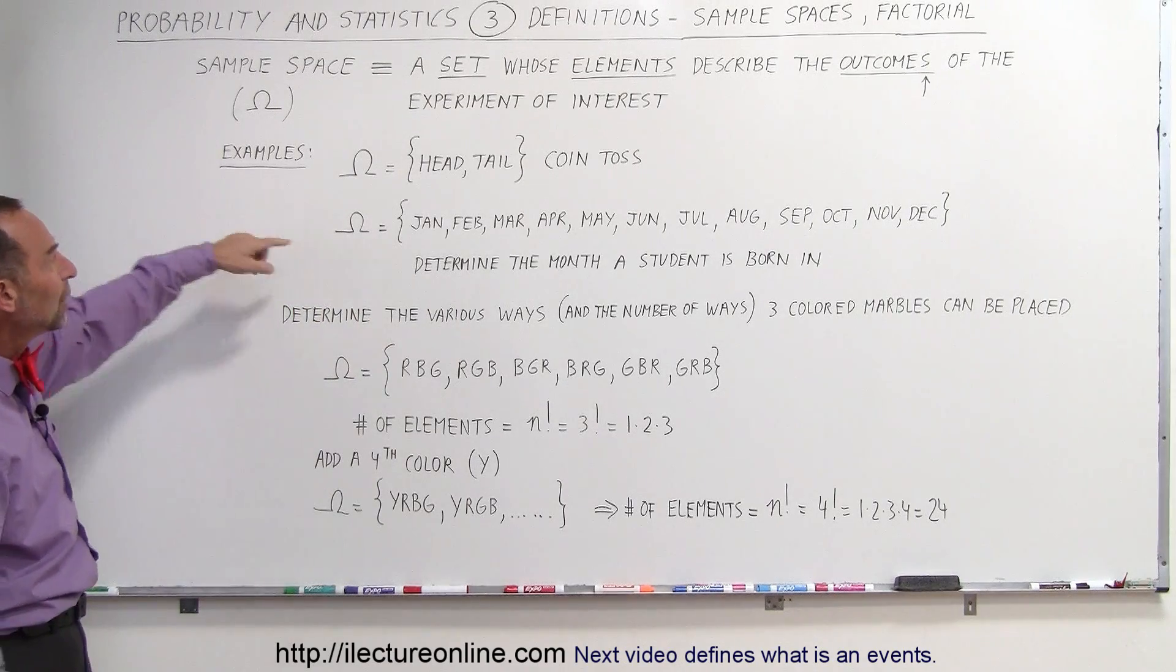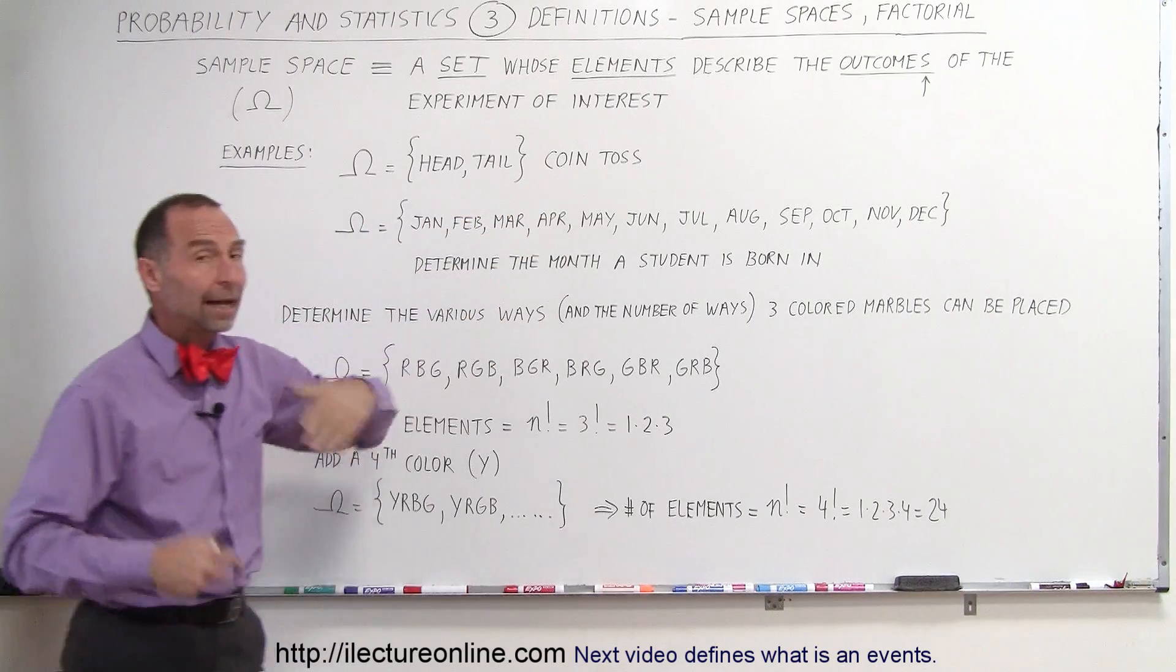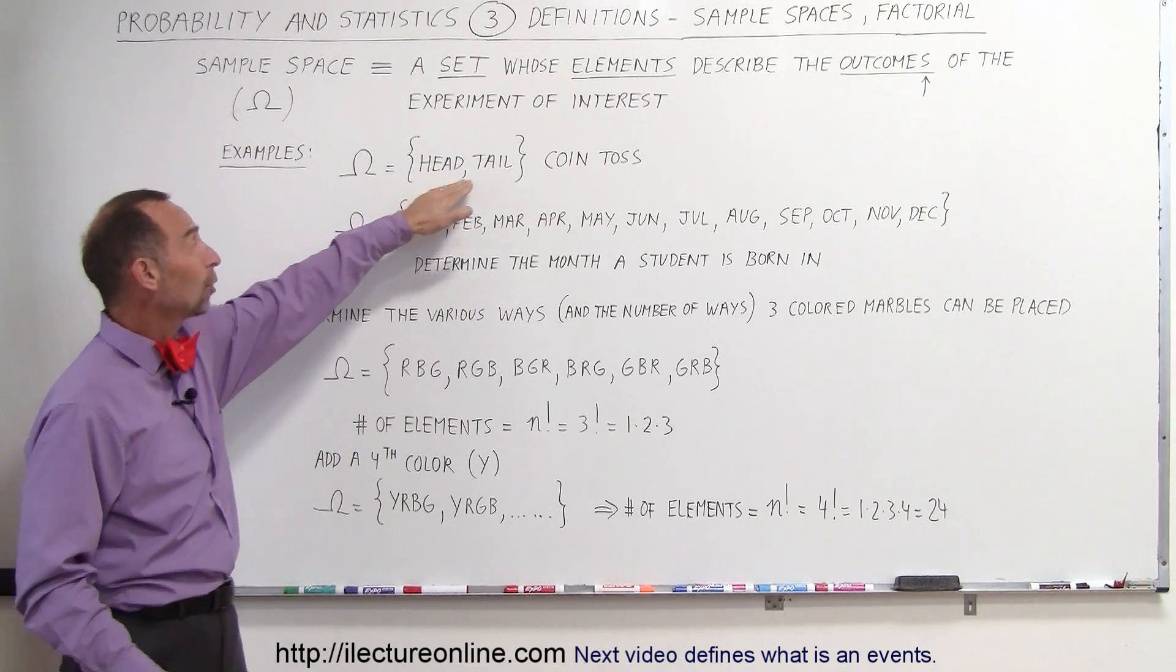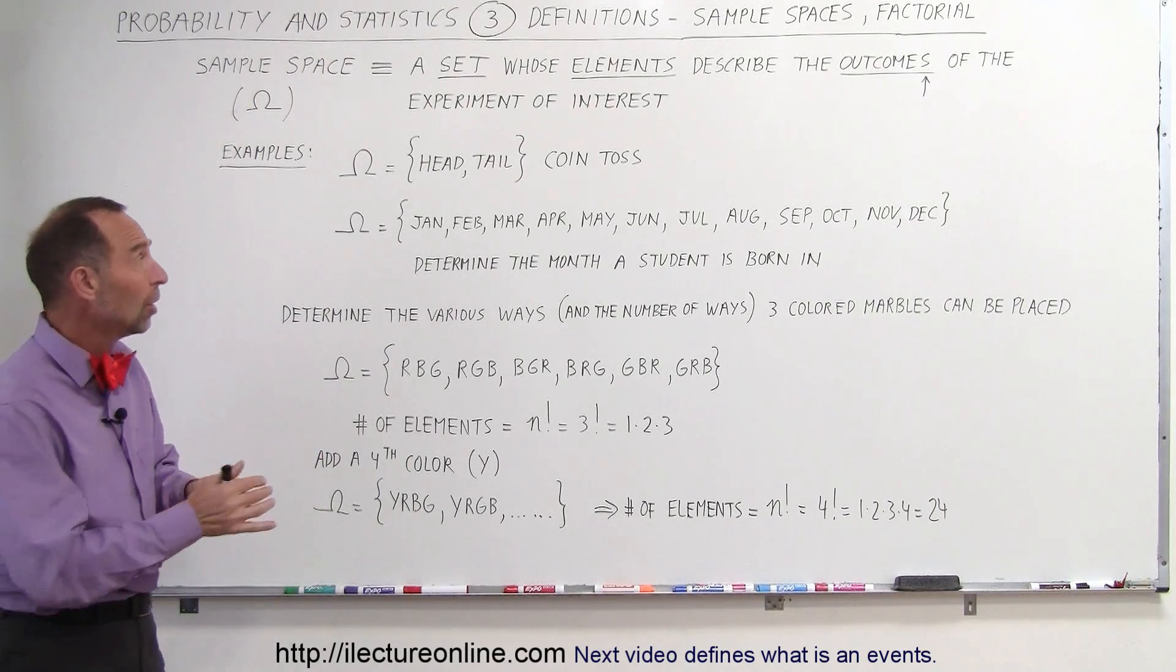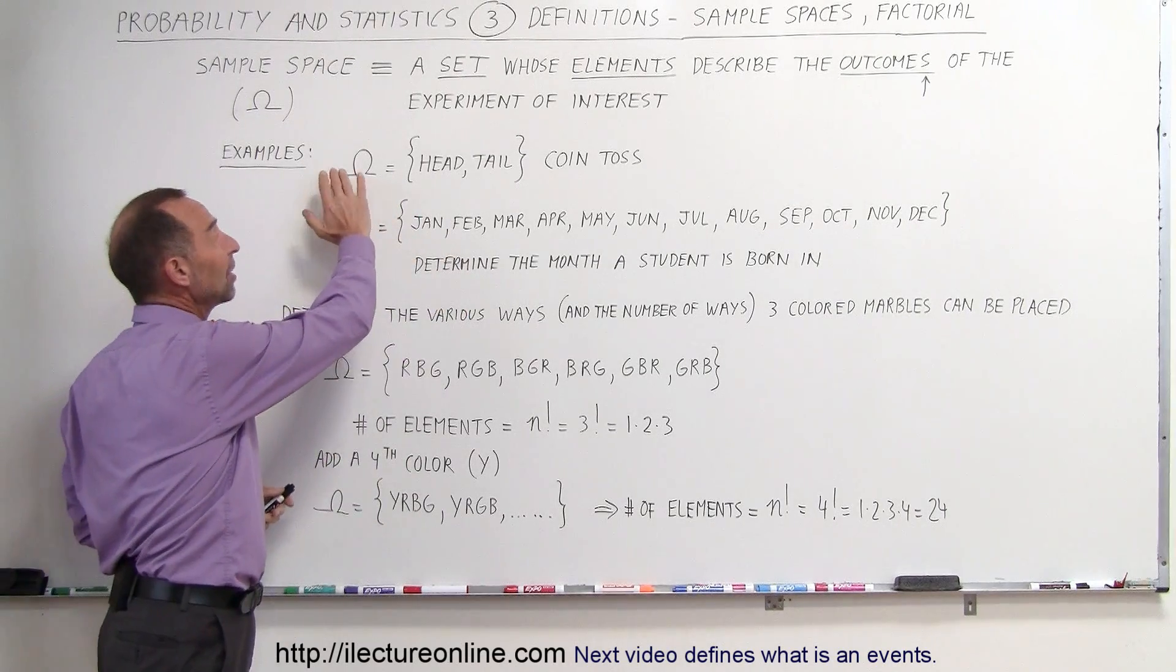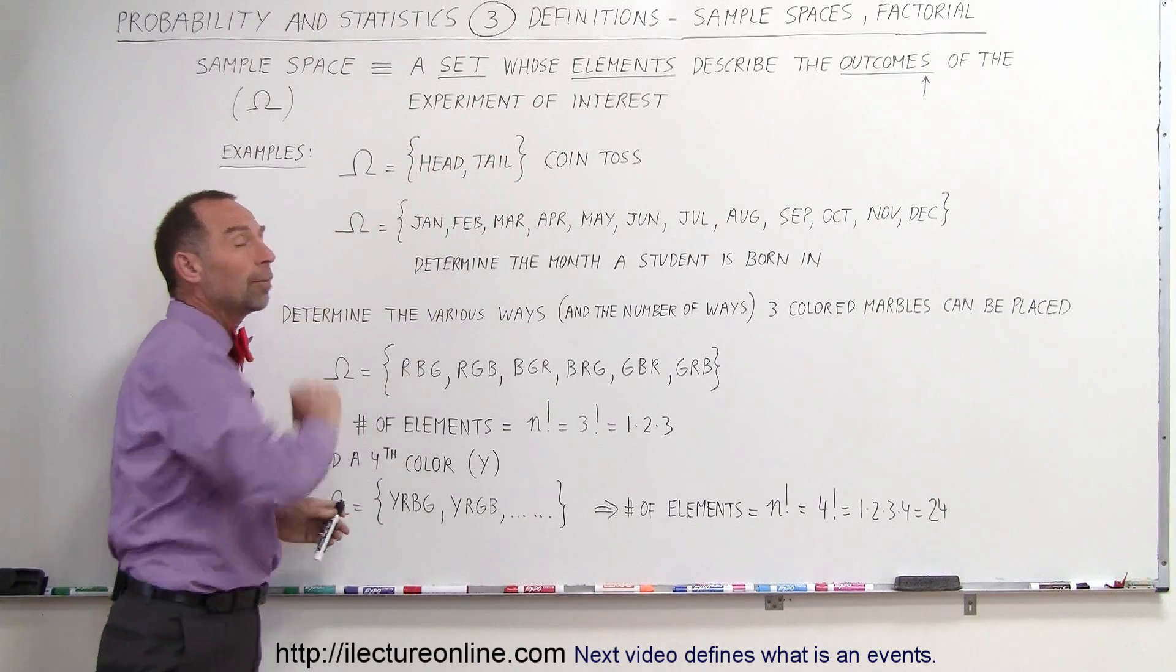For example, when we toss a coin, the outcomes are that we can either get a head or a tail, so those are the two elements. Those are the only two outcomes we can have in this experiment, so therefore that's the sample space including all of the elements, all the possible outcomes.